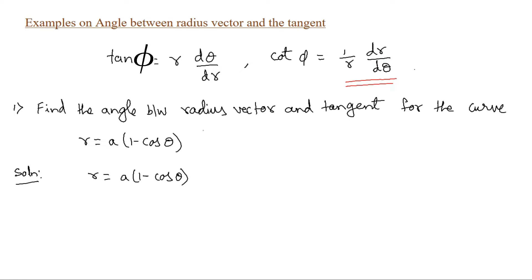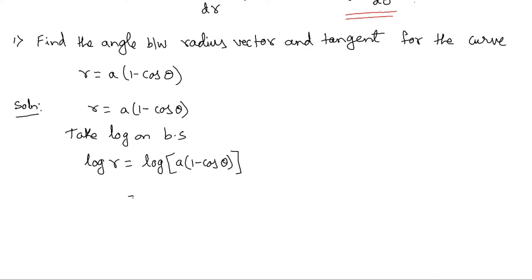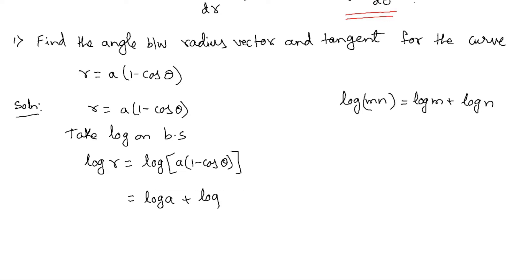To get (1/r)(dr/dθ), the method I will follow starts by taking log on both sides. Taking log on both sides: log r = log[a(1 - cos θ)]. Using the logarithm property log(mn) = log m + log n, the right-hand side becomes log a + log(1 - cos θ).